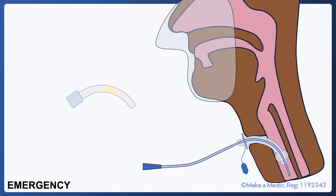The next step involves passing a suction catheter through the tube to try and drain any secretions that may be causing an obstruction. If the suction catheter can pass through the tracheostomy tube into the airways, it suggests that the tube is patent but may be partially obstructed. Tracheal suction should be performed and the patient can be ventilated via the tracheostomy.